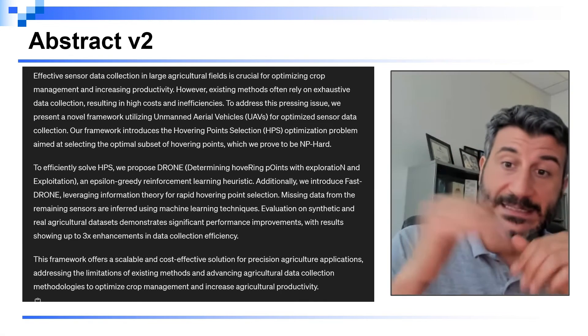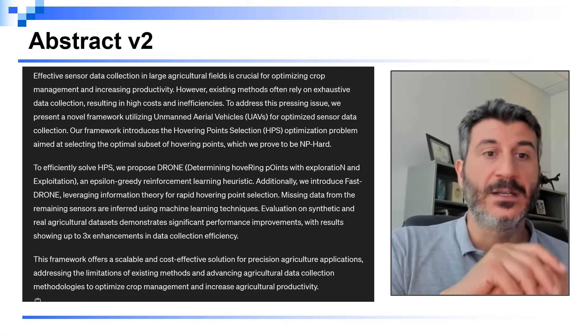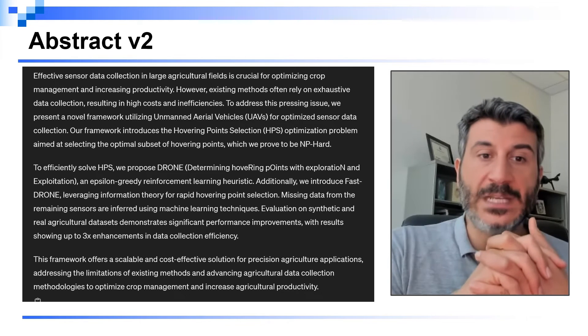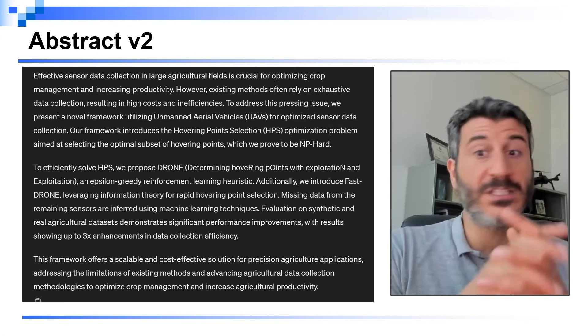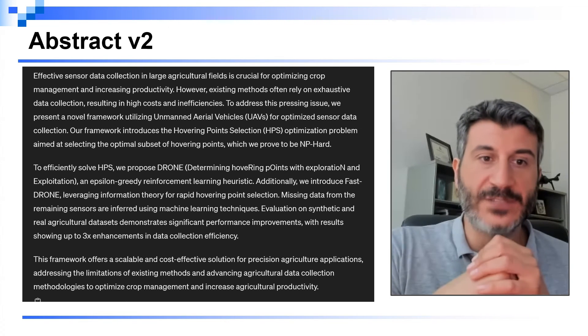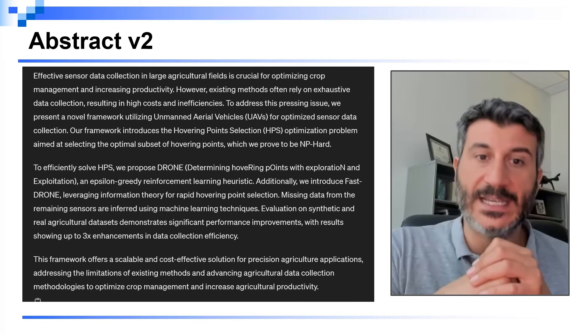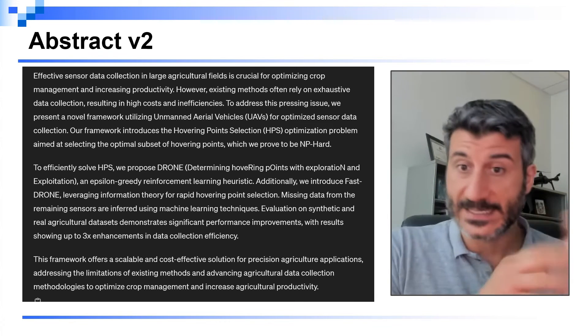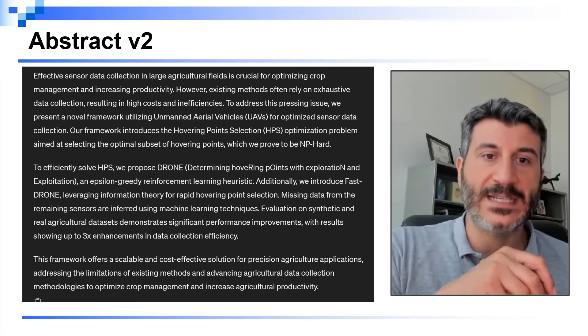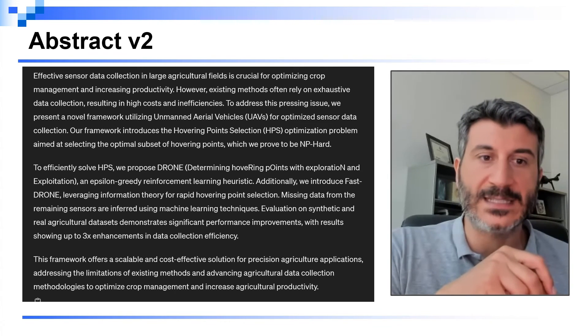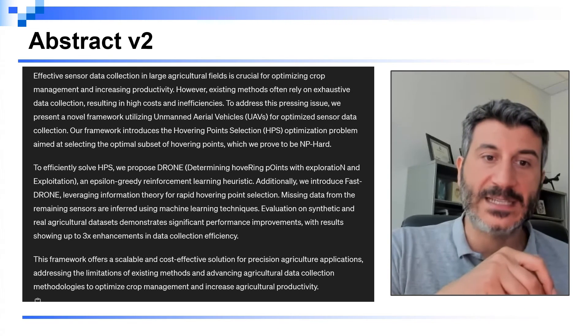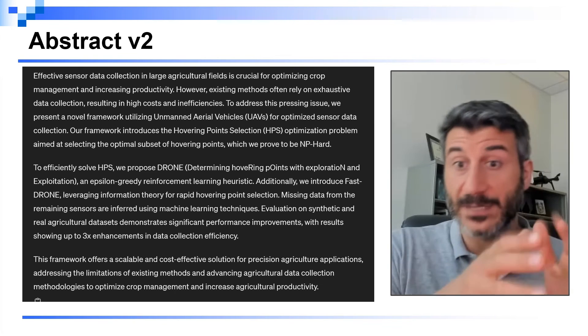Let me read it to you and highlight the different components that we have previously identified. Effective sensor data collection in large agricultural fields is crucial for optimizing crop management and increasing productivity. This is why the problem is important. However, existing methods often rely on exhaustive data collection, resulting in high costs and inefficiencies. These are the limits of existing state-of-the-art solutions. To address this pressing issue, we present a novel framework utilizing unmanned area vehicles for optimized sensor data collection. Our framework introduces the hovering point selection optimization problem, which must select the optimal subset of hovering points, which we prove to be NP-hard.